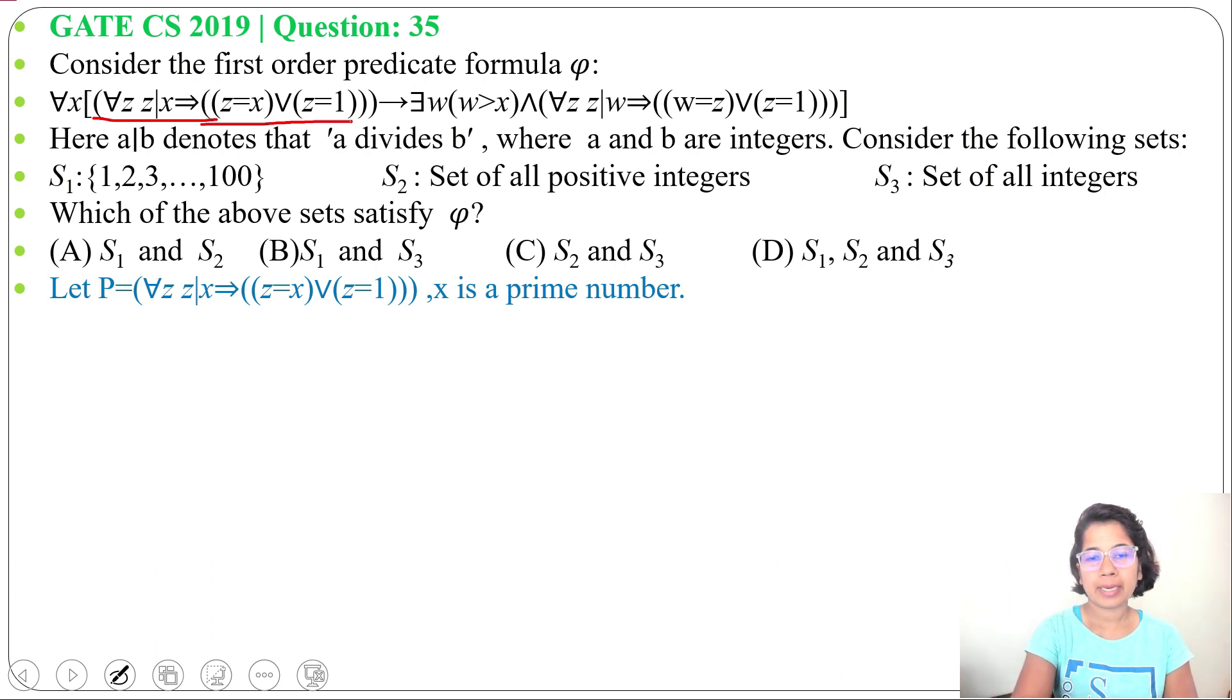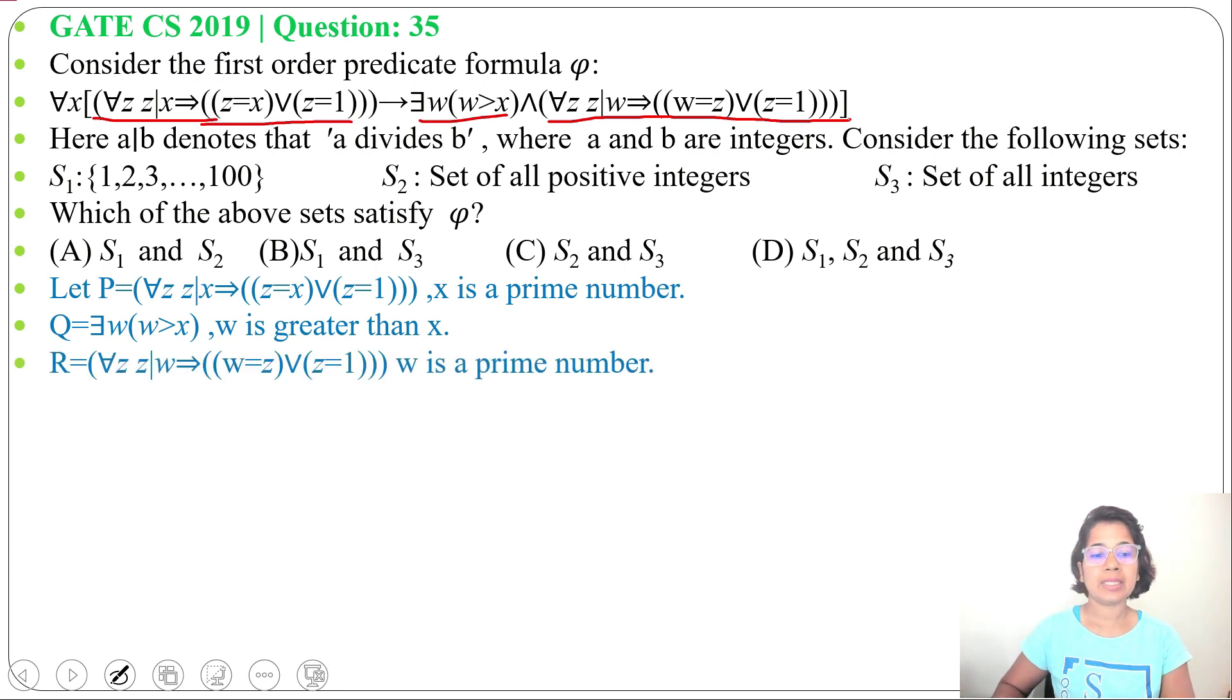Then, there exists w, w greater than x, which means there is another w, w is greater than x. Then, for all z, z divides w implies w equals z or z equals 1. This means w is also a prime number.